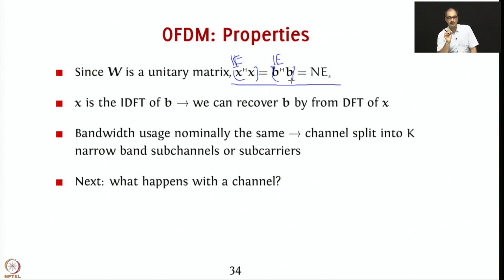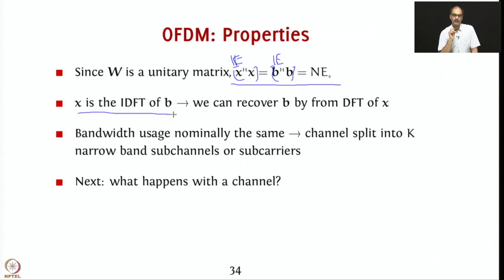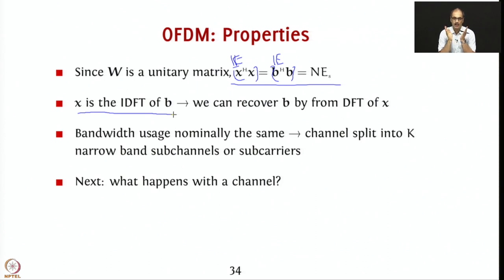X is the inverse DFT of B. We haven't spoken about how to get back B from X at the receiver. Suppose there is no channel and no noise. Since X is the IDFT of B, all you need to do at the receiver is take the DFT of X, because the DFT and IDFT are lossless, reversible operations. So at the receiver, you group N symbols, take the DFT, and you get back your B.